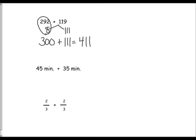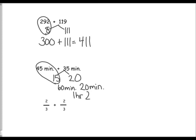You can even use it with time — if 45 minutes only needs another 15 minutes to make an hour, break the 35 minutes into 15 and 20 minutes, getting 60 minutes plus 20 minutes, or one hour and 20 minutes. And with fractions: break two-thirds into one-third and one-third, figure out one whole, and see there is one-third left over.